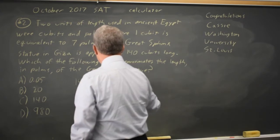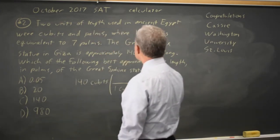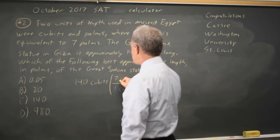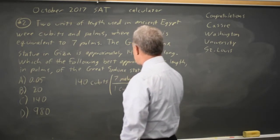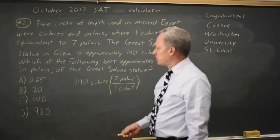We want to cancel cubits and be left with palms where one cubit is equal to seven palms. So if I multiply by seven palms over one cubit, I'm multiplying by an expression equal to one.